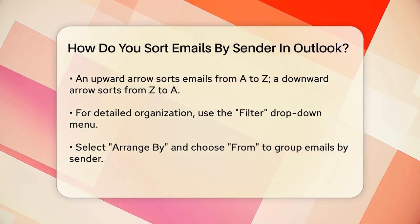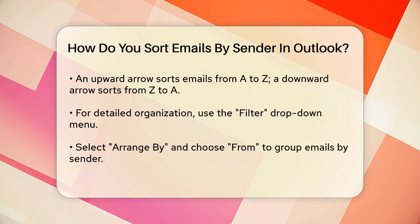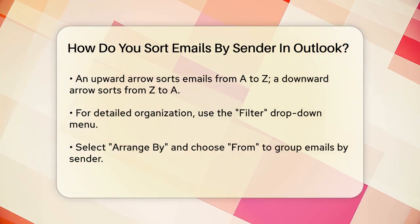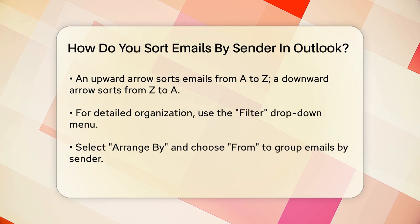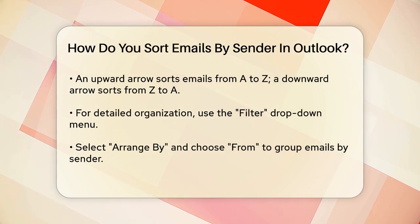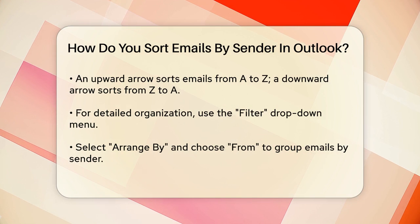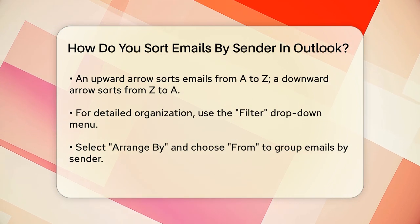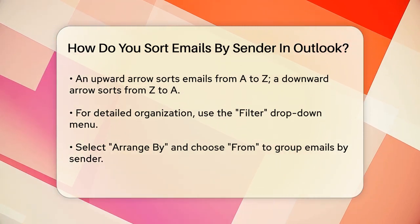For a more detailed organization, you can use the Filter and Arrange options. Click on the Filter dropdown menu above your Inbox view, then select Arrange By and choose From. This will group your emails by the sender, making it easier to see all messages from a particular person.